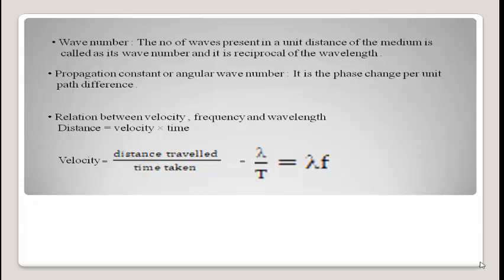So in an exam, if asked to derive the relation between velocity, frequency, and wavelength, the answer is: V = f × λ, where V stands for velocity, f stands for frequency, and λ stands for wavelength. Wave velocity equals frequency multiplied by wavelength.